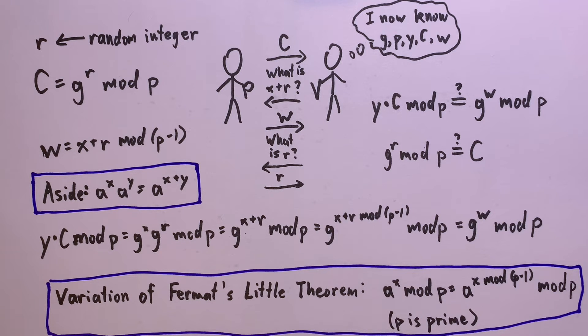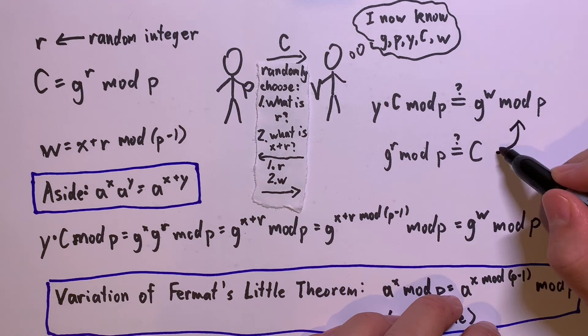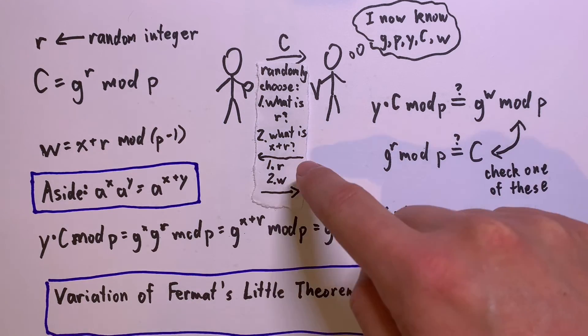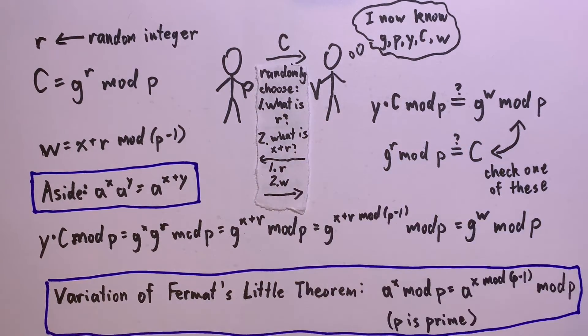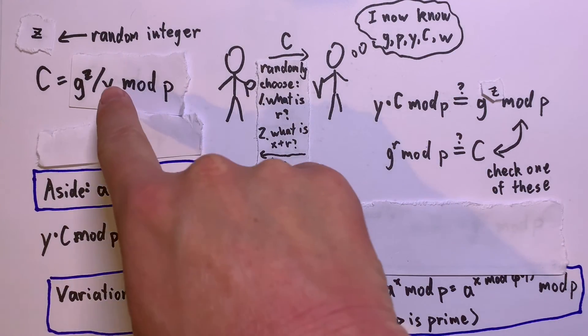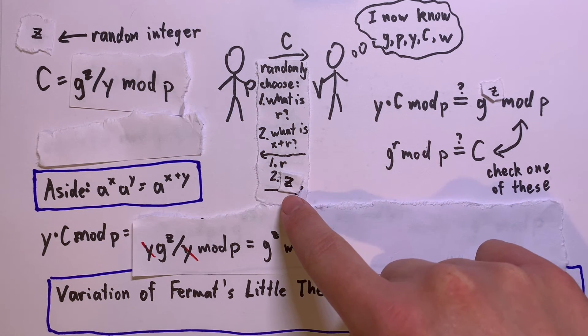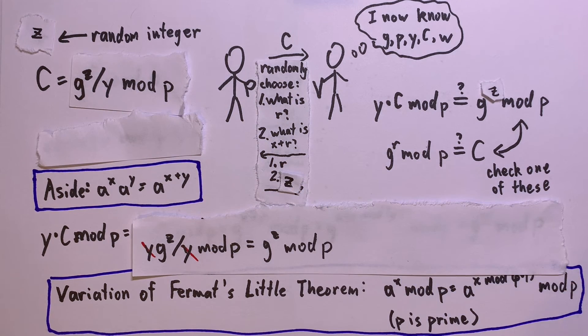Don't give up yet! The trick is to not ask for x plus r and r, but to randomly ask for one of the two. If you don't know x, then you can choose to give c equals g to the r mod p, and then you can provide r. Or you can give c equals g to the z divided by y mod p, and provide x plus r as z. But no matter how you prepare, you cannot provide both r and the x plus r. You're caught in a catch-22!